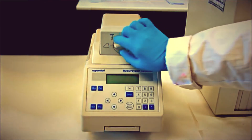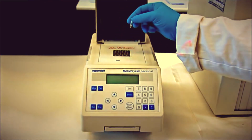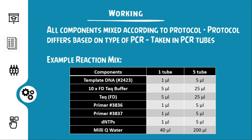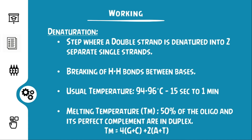The working. All the components are mixed according to the protocol, which is particular to the type of PCR being performed. They are taken in PCR tubes. Here given below is an example of the concentration of components used in a particular PCR reaction. They are then placed in a thermocycler for the PCR process to occur. In a normal PCR process, the first step is denaturation of the double-strand DNA into a single-strand molecule. This involves the breaking of the hydrogen bonds between the bases. This step usually takes place at a temperature between 94°C and 96°C and for a duration of 15 seconds to 1 minute.